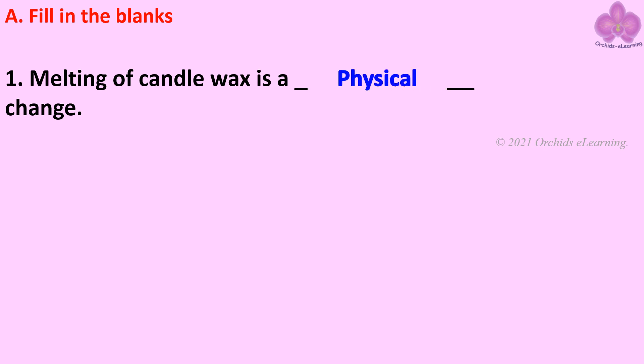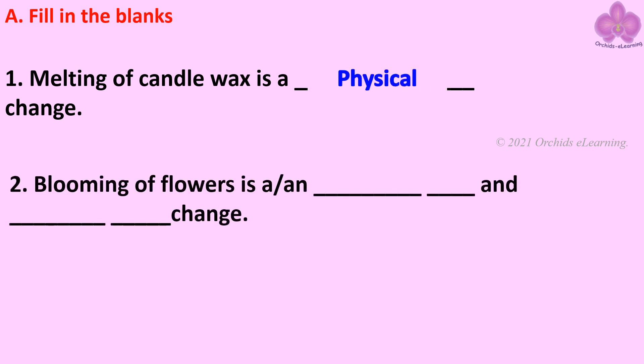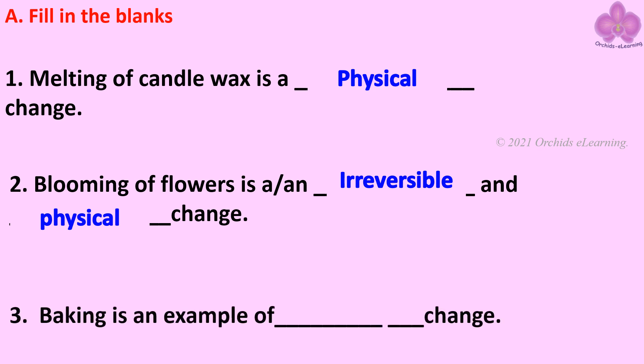Blooming of flowers is a blank and blank change — irreversible and physical. Baking is an example of blank change — irreversible.